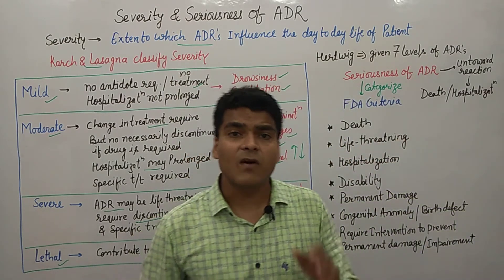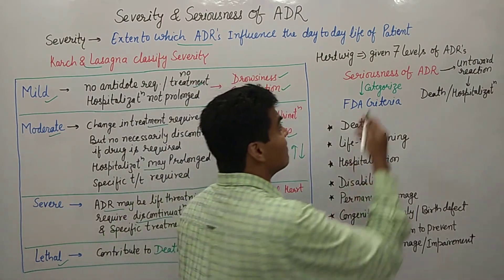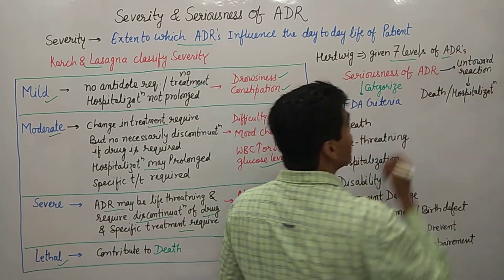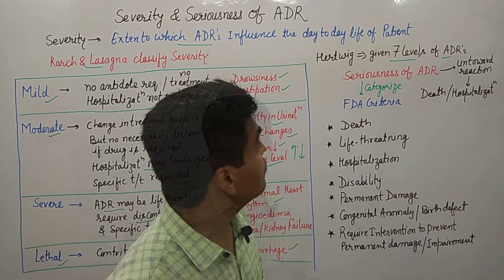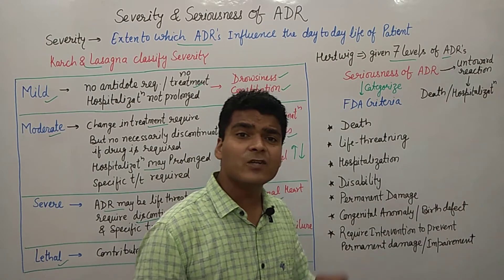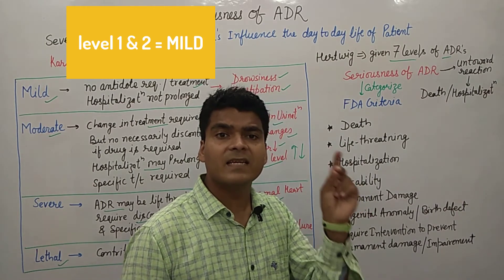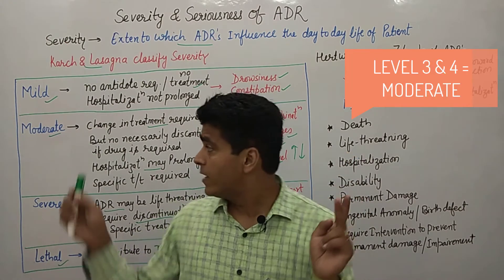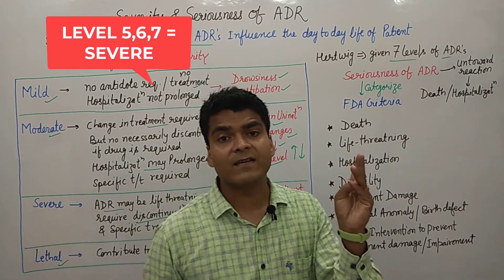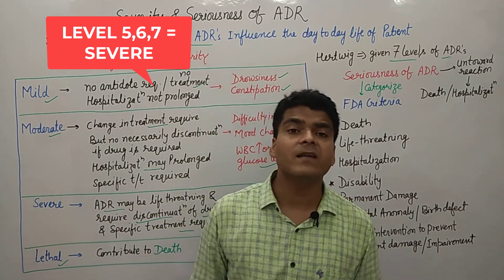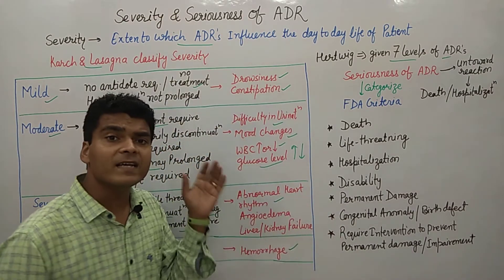Another scientist, Hartwig, also discussed severity on seven levels. In the Hartwig scale, levels one and two fall under mild, levels three and four fall under moderate, and levels five, six, and seven fall under severe ADR.